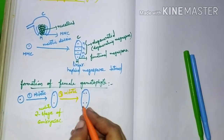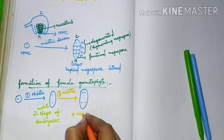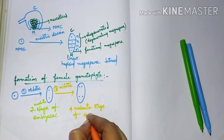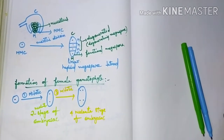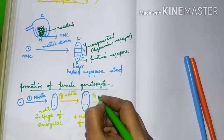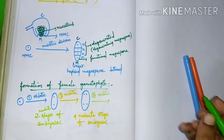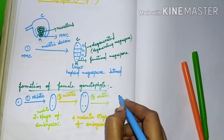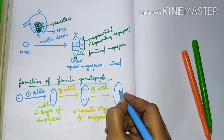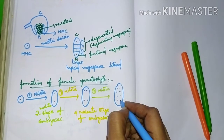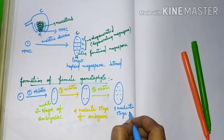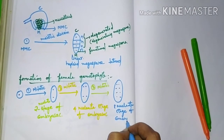This is called the four-nucleate stage of the embryo sac. This four-nucleate stage of the embryo sac undergoes the third mitotic division, resulting in the formation of the eight-nucleate stage of the embryo sac.